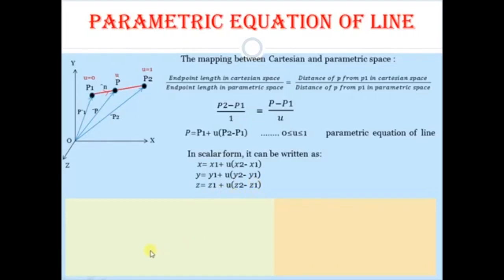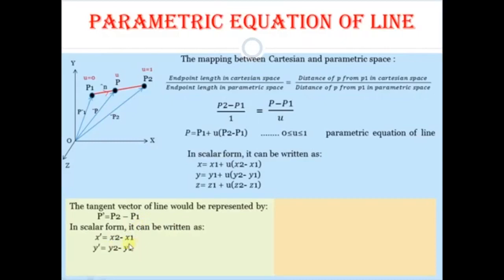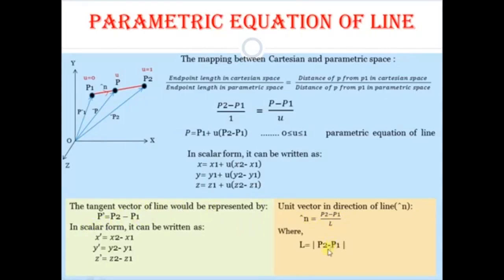Now we find the tangent vector. The tangent vector is P' = P2 − P1. In scalar form: X' = X2 − X1, Y' = Y2 − Y1, Z' = Z2 − Z1. The unit vector along the direction of the line is N̂ = (P2 − P1) / L, where L is the length of the line, calculated as L = √[(X2−X1)² + (Y2−Y1)² + (Z2−Z1)²].